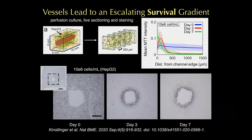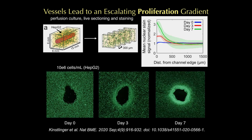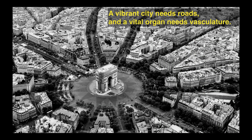More recently, this is work from Ian Kinslinger in our group, who has been looking at HepG2 cells — highly metabolically active mammalian cells. We were able to quantify that in highly proliferative cells, we're getting escalating gradients of survival — you can see this with MTT staining — and escalating proliferation gradients that tend to follow each other. In these non-degradable gels, we think the cells are proliferating closer to the vessel and dying further away.